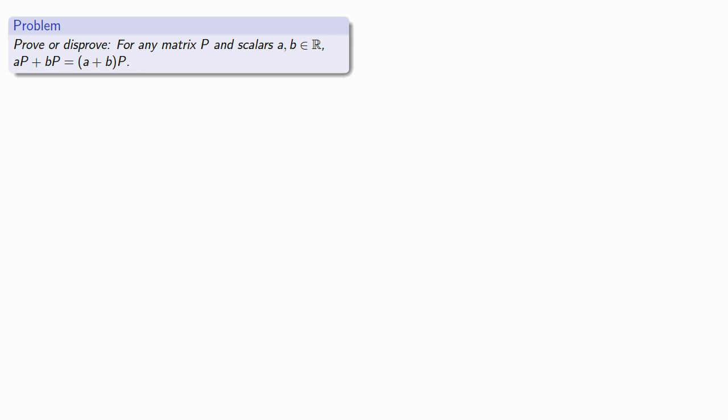Notice that if this statement happens to be true, it's as if we took this matrix P on the right and distributed it among the scalars a and b, and so we might actually call this right distributivity.